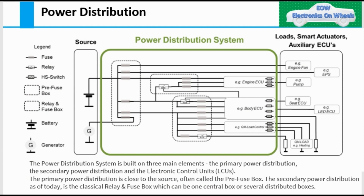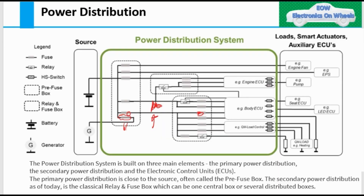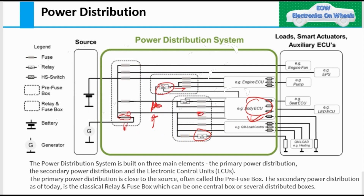Power distribution as it is today is based on a wire harness to transport energy, fuses to protect the wire harness, relay and switches to start and stop the energy flow, and ECUs to control the energy flow. The power distribution system is built on three main elements: primary power distribution, secondary power distribution, and ECUs.